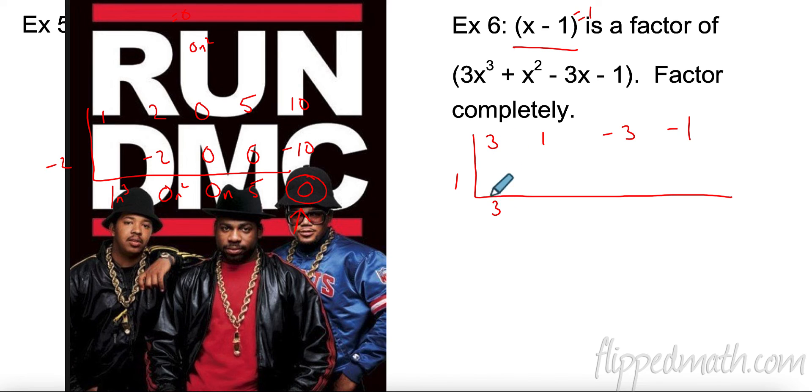So I add down, multiply, add down, multiply, add down, multiply, add down. So it does go in evenly. So this is now 3x squared plus 4x plus 1.